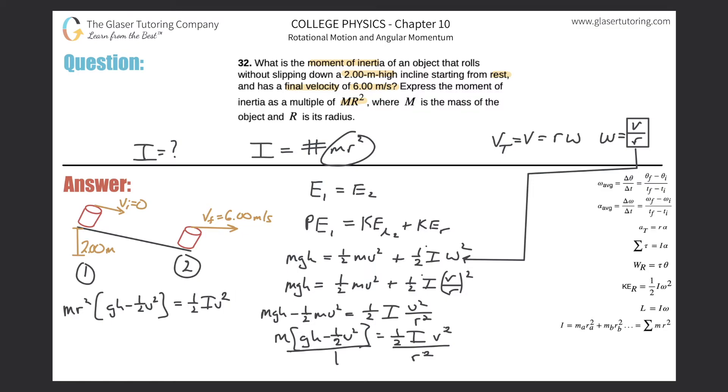So I equals mr² times (gh minus one-half v²) times two divided by v². This looks complicated but you know everything. You don't know the mr² but that's okay, leave it alone. We have to get it in terms of mr². You do know g = 9.8, height = 2, and velocity = 6.